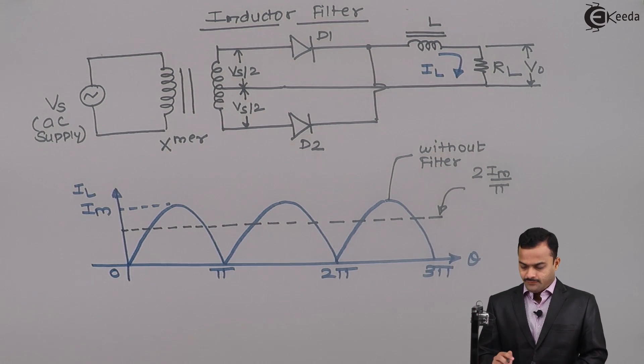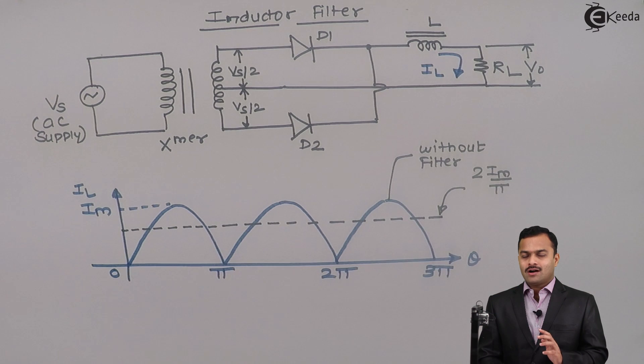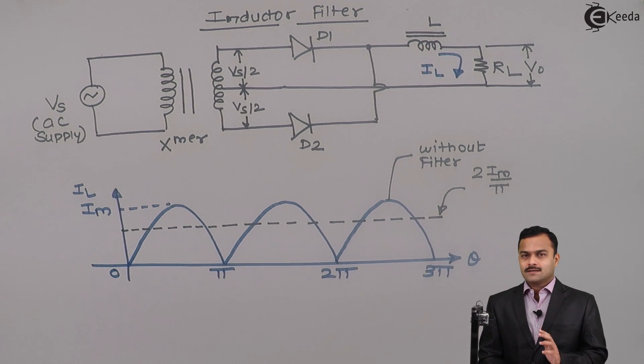Now, what will happen if filter is connected? We know the fact that inductor doesn't allow instantaneous change in the current and because of that it allows DC but it blocks AC. What does that mean?